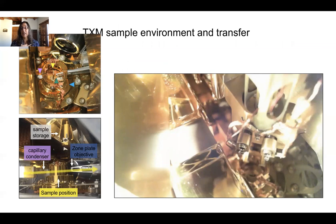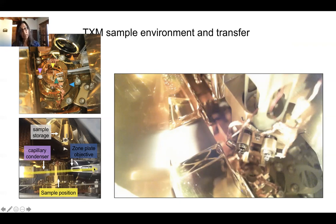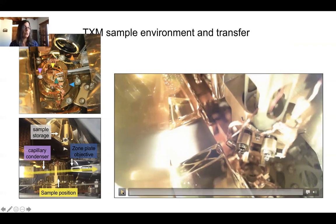Inside the microscope, everything is enclosed in a metal box because soft X-rays don't travel well in air — everything is under high vacuum and cooled via conduction because samples remain cold throughout. You can see the sample holder, our optics — the green arrow points to the zone plate objective, and the pink arrow points to the capillary condenser. A side view shows the light following the yellow arrow direction, with cryo shields obstructing the view.